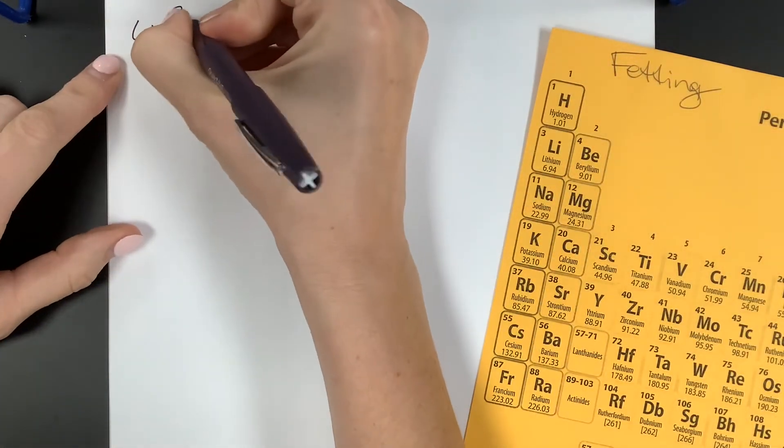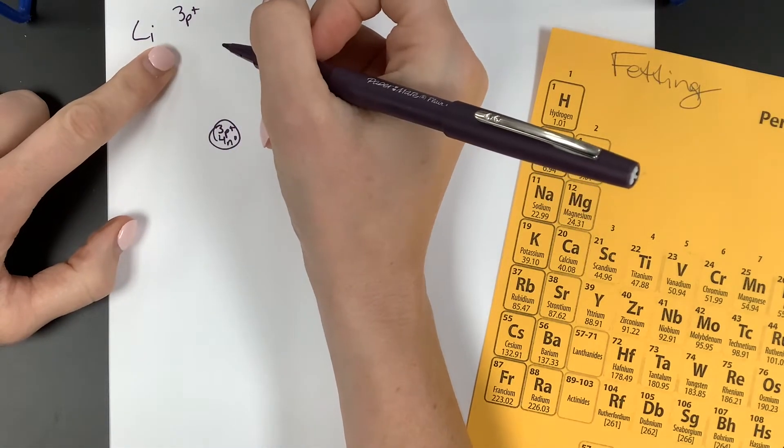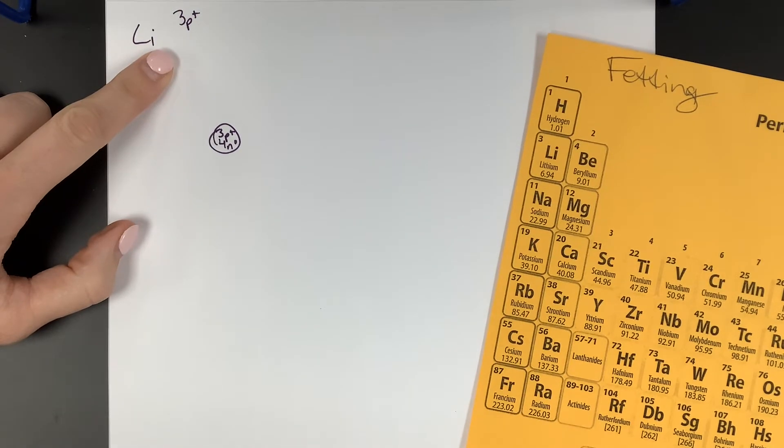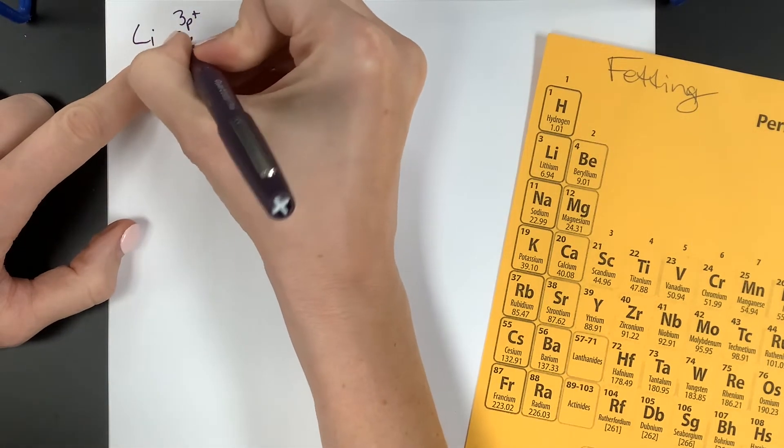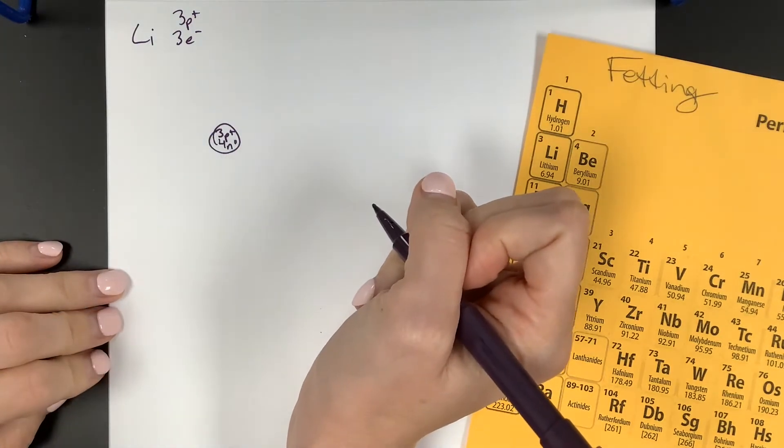All right. So then lithium has three, I'm going to write this up here too. Three protons. So how many neutrons? Nope. How many electrons does a neutral lithium have? If it has, yeah. Okay. If it has three positive charges, it has three protons, then how many negative charges, how many electrons does it have? If it's neutral, it's going to have three electrons. So we're going to add those on. How many electrons go into the first shell? Two.